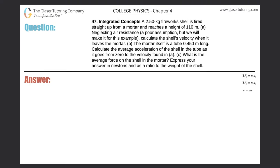Number 47, integrated concepts. A 2.5 kilogram firework shell is fired straight up from a mortar and reaches a height of 110 meters. Letter A: neglecting air resistance — a poor assumption but we'll make it for this example — calculate the shell's velocity when it leaves the mortar. So the firework is fired straight up and reaches an overall height, delta y, of 110 meters, and it leaves the mortar with some initial velocity.